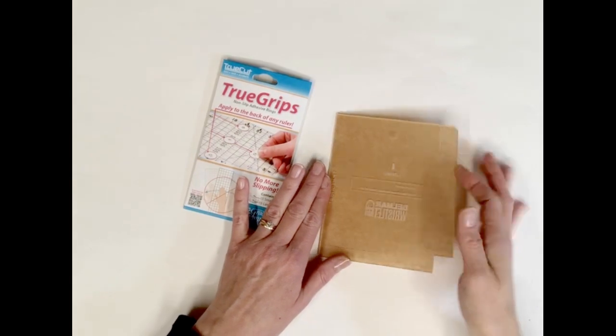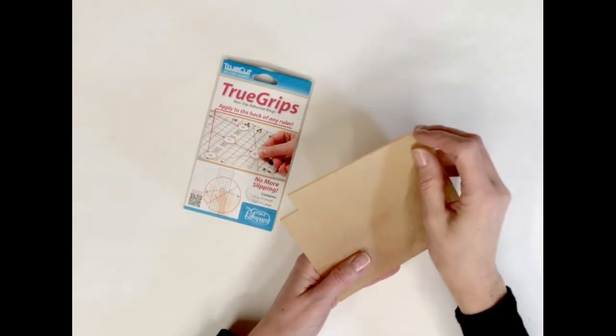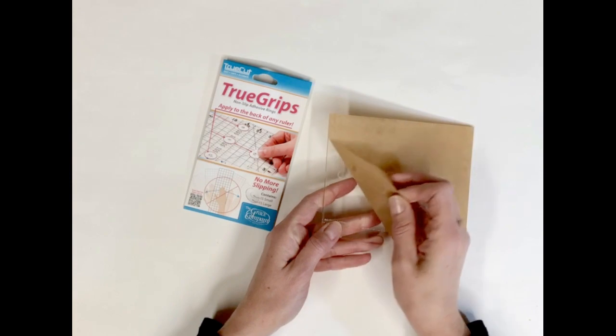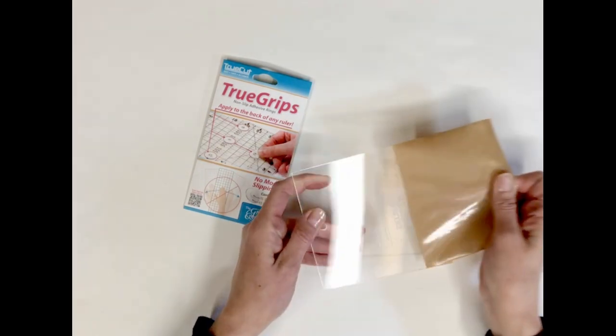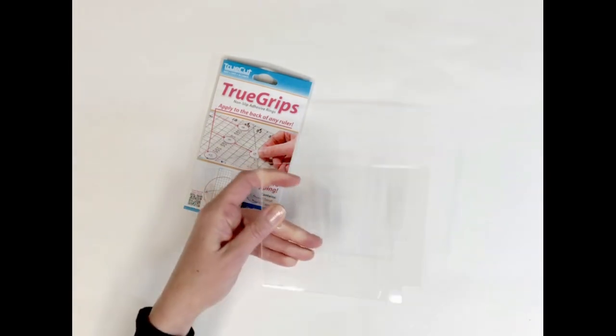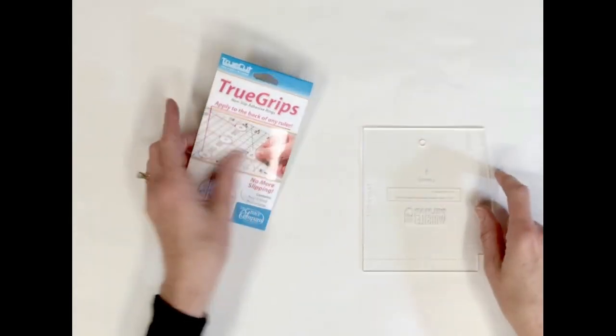When you receive your laser cut templates from that template shop, you will need to peel off the protective paper on the right side of the template. On the wrong side of the template piece, apply the non-slip adhesive tape.